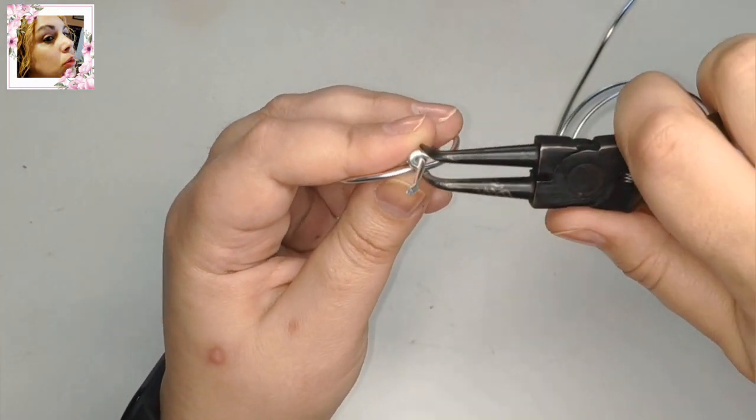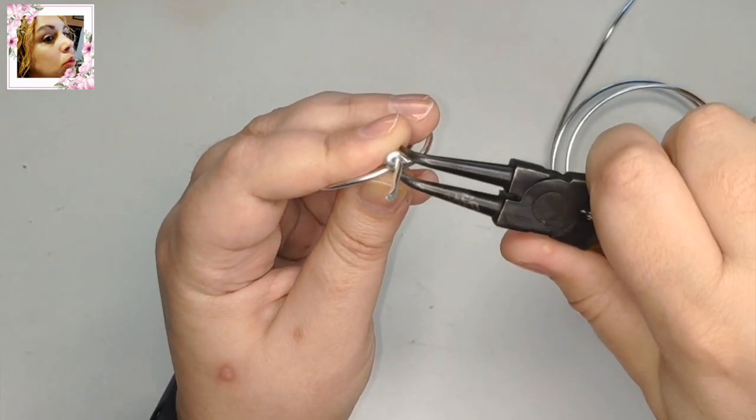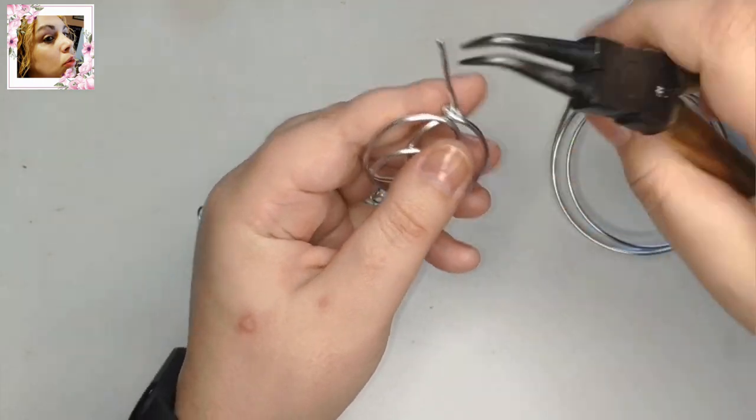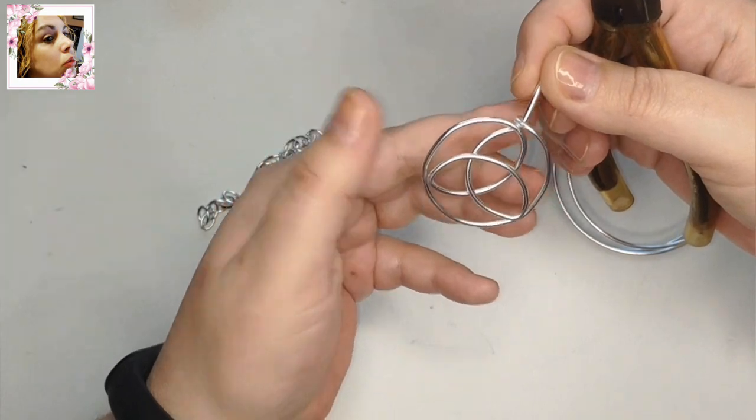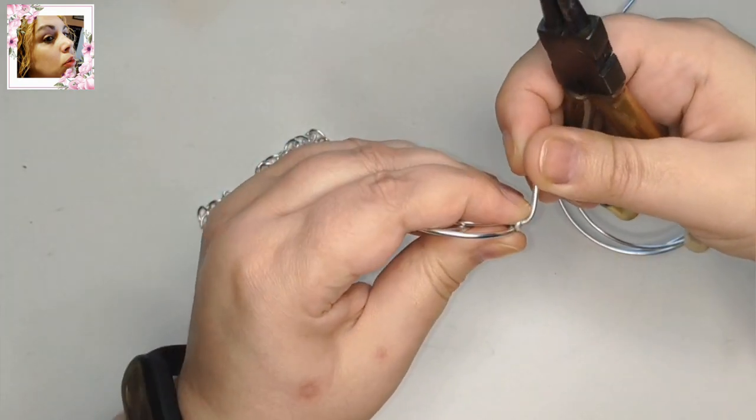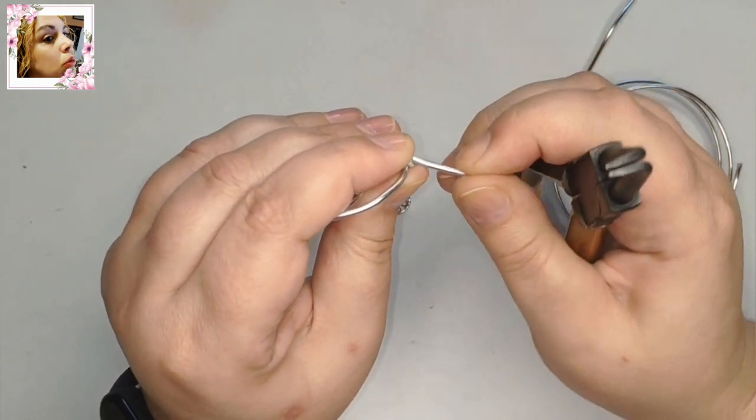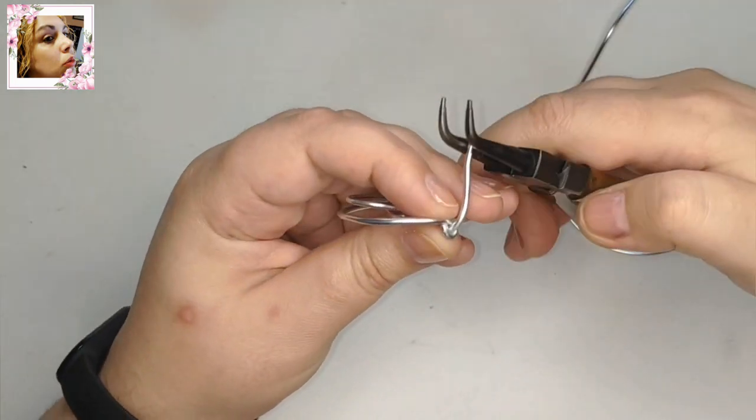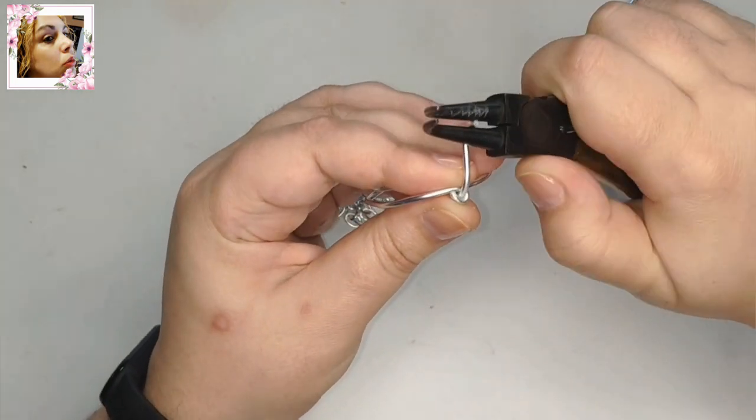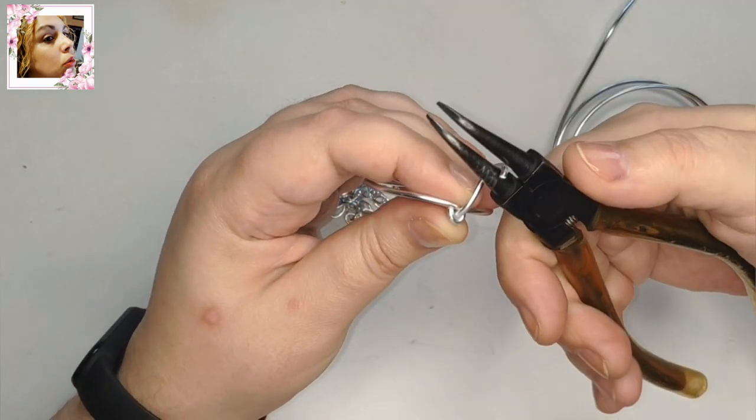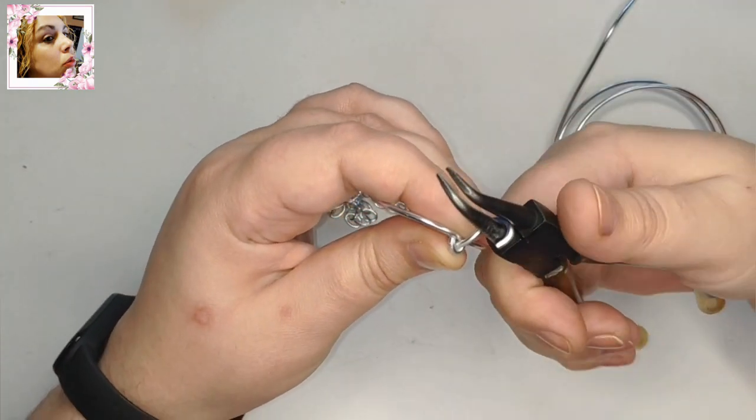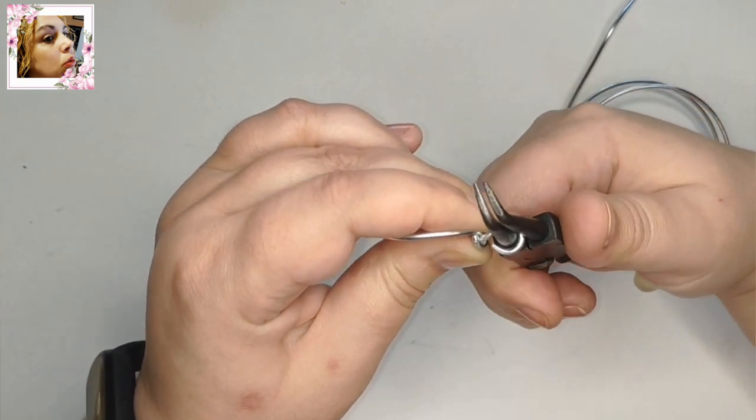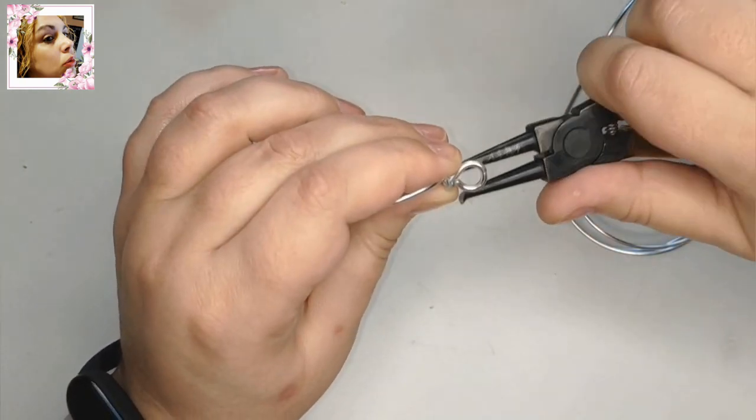The only thing left at the top is to make the bail, the loop to attach it to the chain. So we bend well and make the circle, a large circle because the chain is quite thick and the pendant is also very large. Really, this piece weighs nothing.